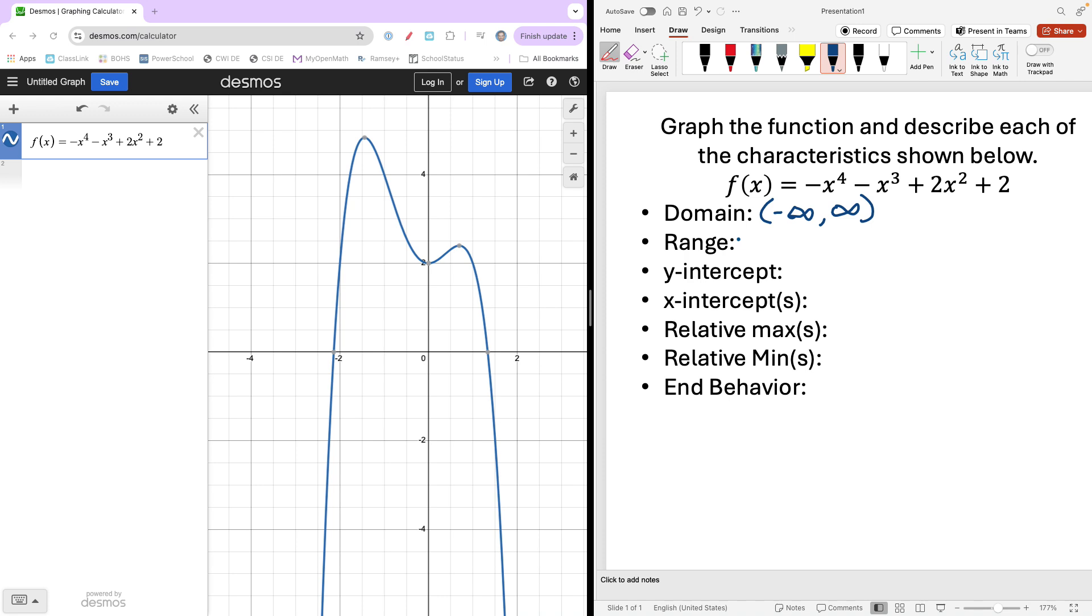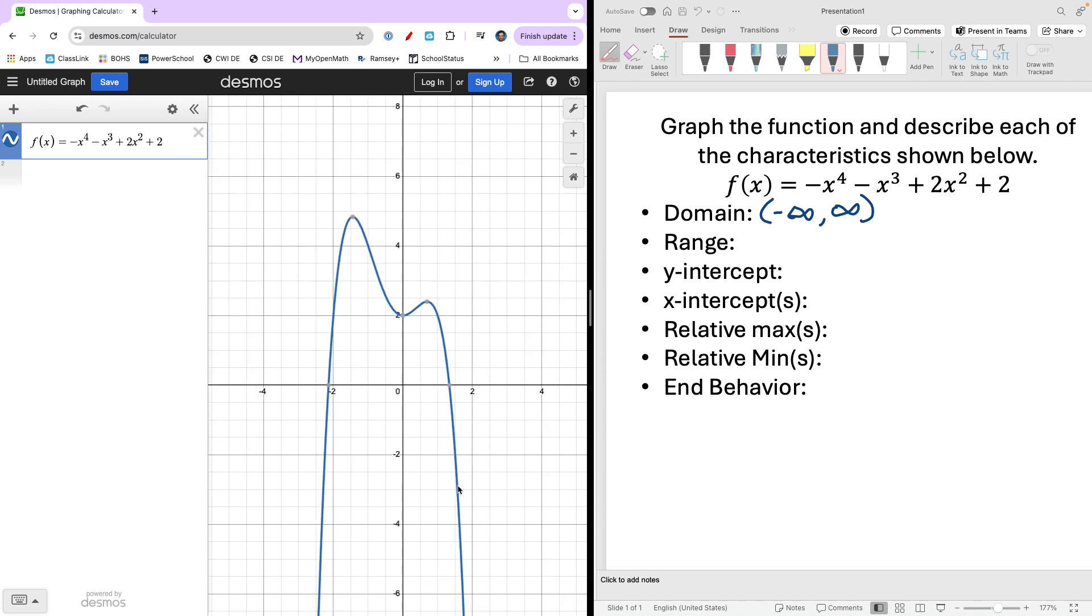Now for the range, it's going to depend on the function. Let's look at this one. We've got a high point up here, and notice both sides look like they're going down. This is the highest y value. Let me just click on that so it'll stay on the screen. And it goes down from that.